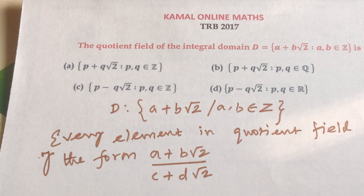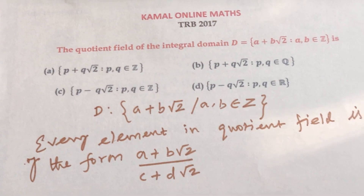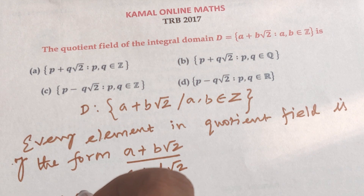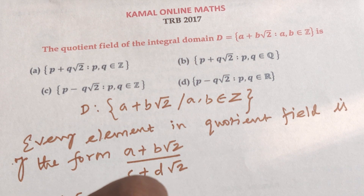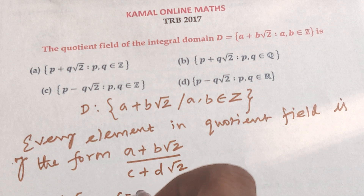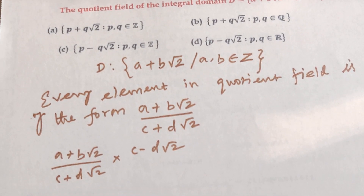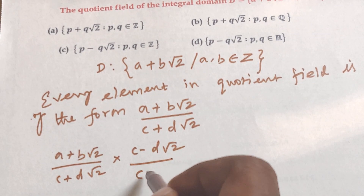We have the quotient field in the form of a fraction with numerator and denominator. To simplify, we rationalize by multiplying numerator and denominator by the conjugate. So we multiply by C minus D root 2 over C minus D root 2: (A plus B root 2)(C minus D root 2) divided by (C plus D root 2)(C minus D root 2).